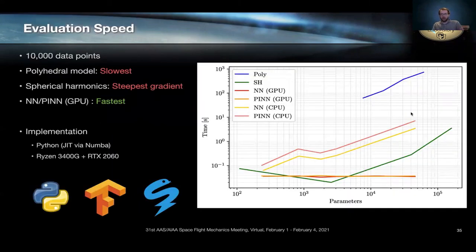So when we look at the evaluation time to simulate 10,000 data points using each of these gravity models versus a function of parameters in those models, you find that the absolute slowest is the polyhedral model. The gravity model with the steepest gradient is spherical harmonics, so it becomes more expensive to compute the more parameters you have. The consistently most performant gravity model is the neural network representation performed on the GPU.